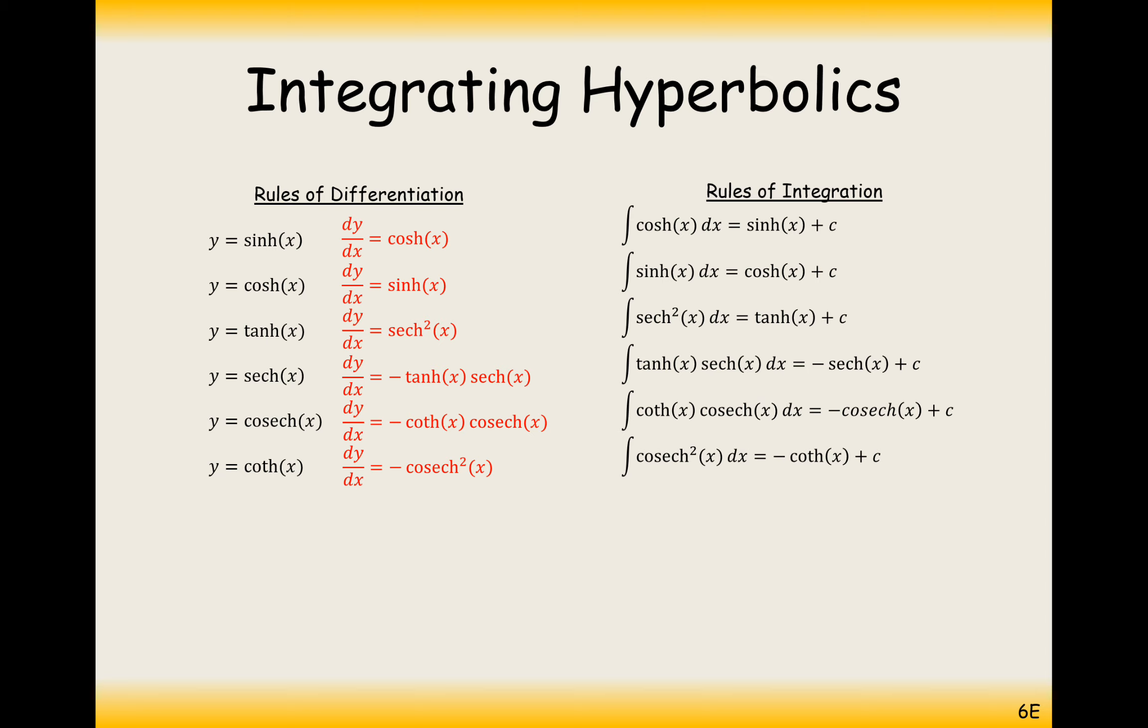Some other helpful ones: the integral of tanh. We can do this using the ln rule because tanh is sinh over cosh, and the bottom differentiates to the top, which is the ln rule, so that would be ln cosh. You could do the same thing for coth as well because coth is cosh over sinh, so that's ln sinh.